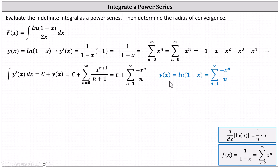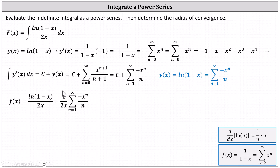Now that we have the power series for y(x), we can go back and determine the power series for the original integrand function, which is natural log of (1 minus x) divided by 2x. We can write this as 1 divided by 2x times the power series for natural log of (1 minus x), which is the sum from n equals 1 to infinity of negative x to the power of n divided by n. Now we bring the 1 divided by 2x into the power series.